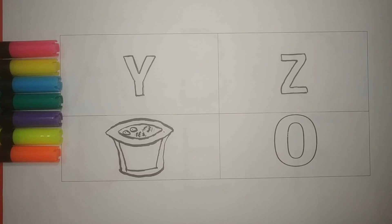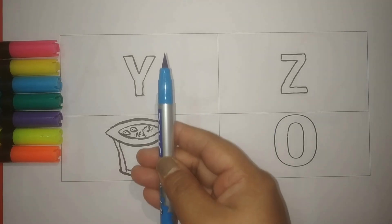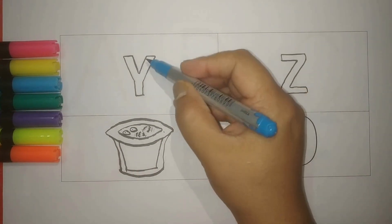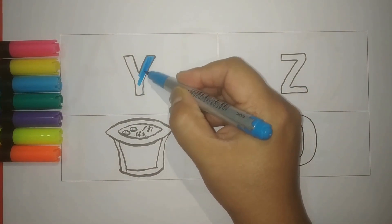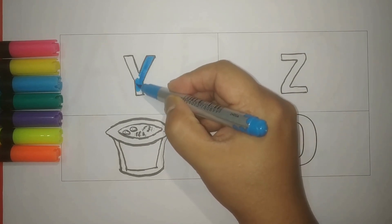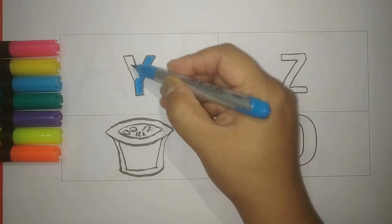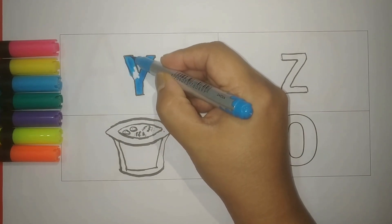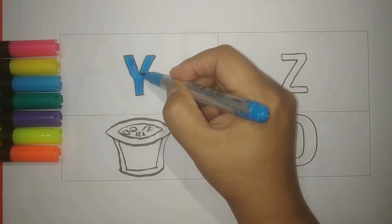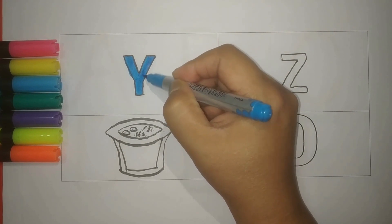Hi kids, hello bacho. Blue Y, blue color Y. Y for yogurt. What other words start with the letter Y? Y for yark, Y for yap.